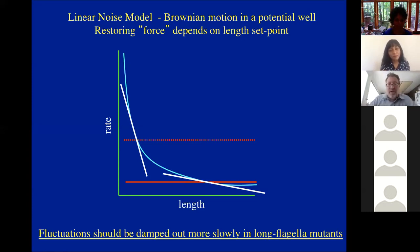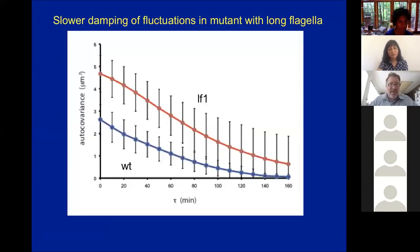So the prediction then would be that, yes, you have increased intrinsic variation because it takes longer to damp out fluctuations. And so because we have live cell measurement of the length, we can actually measure this. And the result is indeed, if we plot autocorrelations of wild type cells versus long flagellum mutants, we find that in all cases, the long flagellum mutants have a longer correlation timing, they're taking longer to damp out the fluctuations that they have.